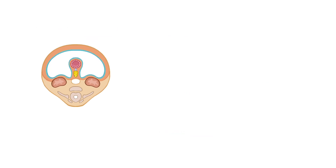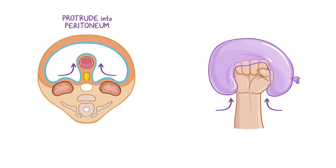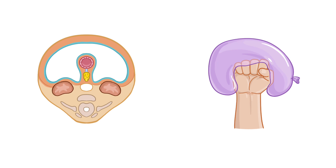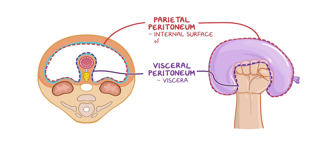As abdominal organs develop, they protrude into the peritoneum like pushing your fist into a balloon. Your fist represents the developing abdominal viscera and the balloon represents the parietal peritoneum. As your fist pushes into the balloon, it is lined closely by part of the balloon, and this represents the visceral peritoneum. So the visceral peritoneum covers the viscera, while parietal peritoneum lines the internal surface of the abdominal pelvic wall, and these two layers are continuous with one another.